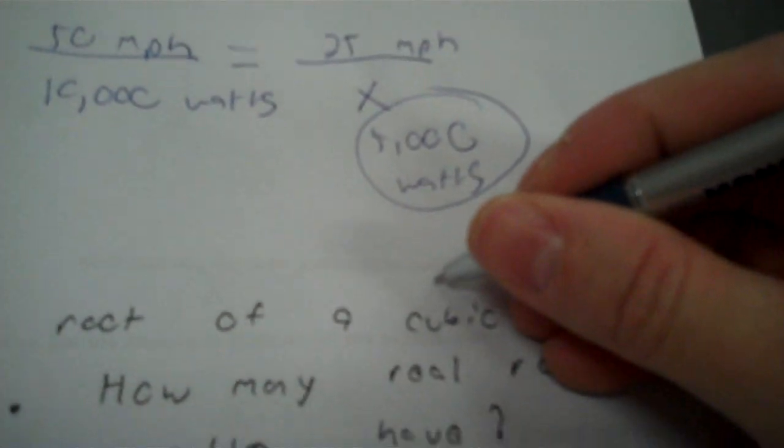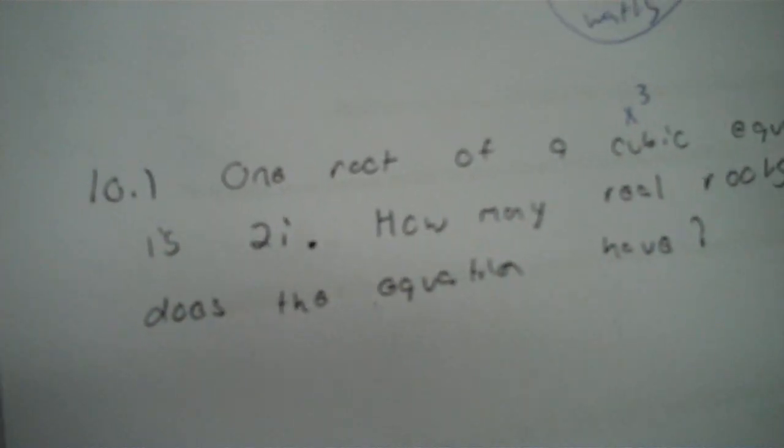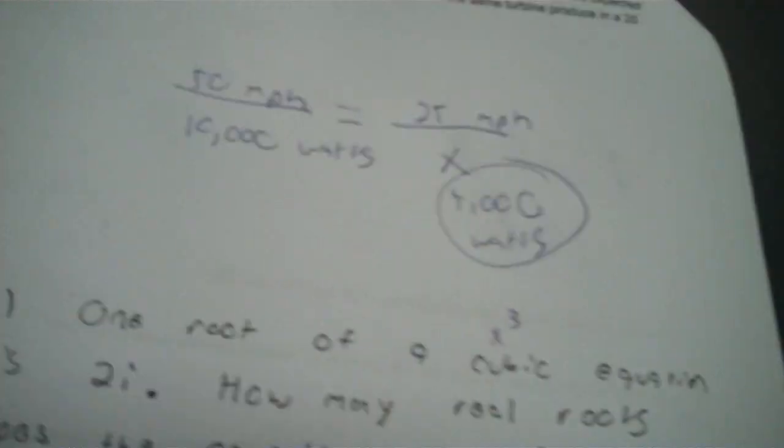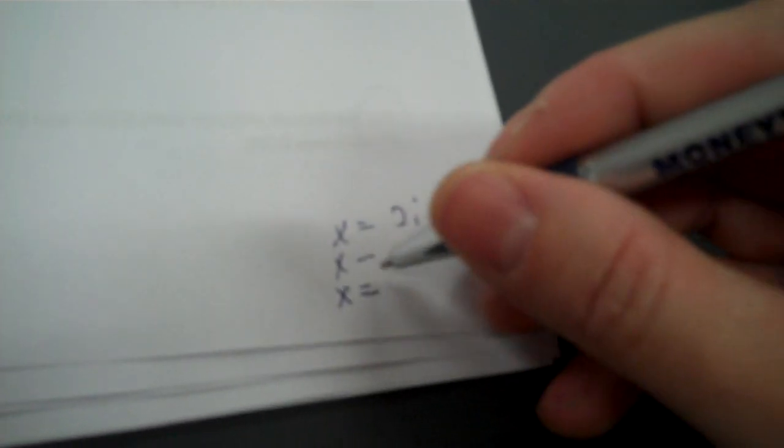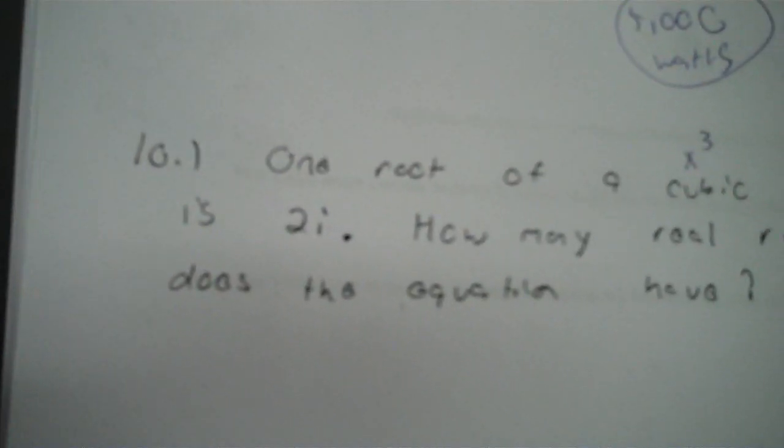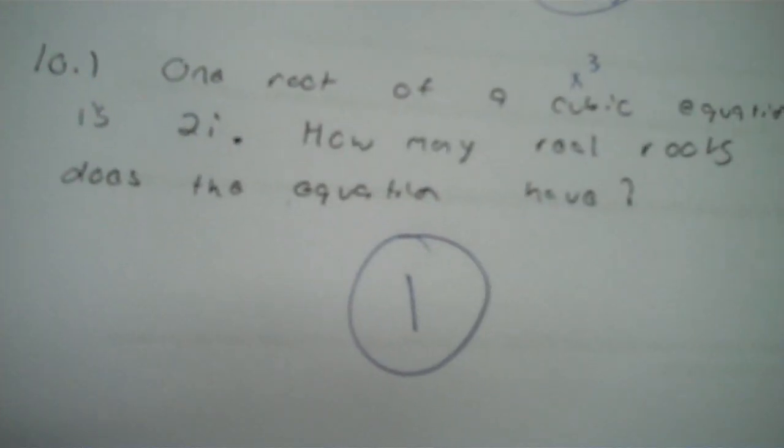One root of a cubic equation is 2i. How many real roots does the equation have? Roots mean solutions. If 2i is one of them, negative 2i has to be the other, because complex roots run in pairs. Those are two complex roots, which leaves one real root. So how many real roots? You have one. If they tell you the positive imaginary root, the negative is also one.